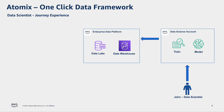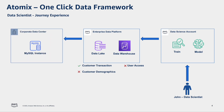He goes into the enterprise data platform and searches for customer demographics data and customer transactions data. He was able to find customer transactions data in one of the data warehouse tables, but he doesn't have access to that, so he has to raise a request. On the other hand, he couldn't find any table containing customer demographics data. But he knows that one of the on-prem databases in MySQL has that information in the customer master table. First, he needs to bring in the demographics data from the on-prem database to the enterprise data platform, and even after bringing in the data, he will not have access to the table by default, so he has to raise a request to get access to the customer demographics data as well.